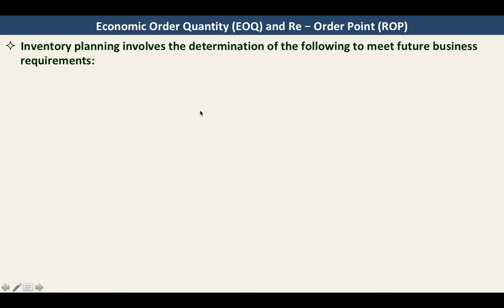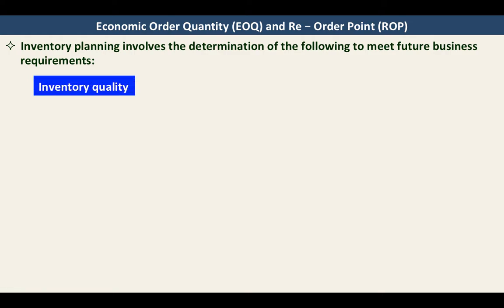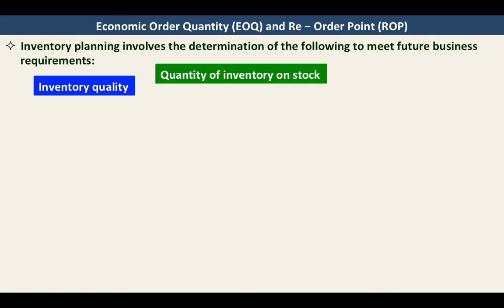What are the things that we have to consider when we are doing inventory planning? First is inventory quality — it is a very important factor in inventory planning. We have to make sure that we are ordering the right quality of our inventory. Second, the quantity of inventory in stock. We have to make sure that there is a right level of inventory in our warehouse, and with that we can consider the timing of order.